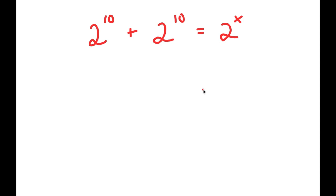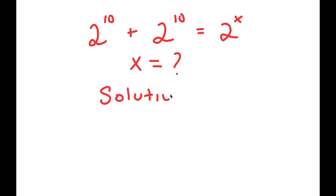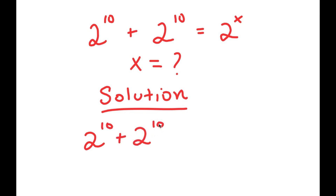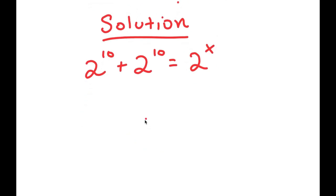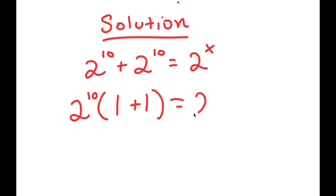Now for the next problem: 2 to the power of 10 plus 2 to the power of 10 equals 2 to the power of x — find the value of x. I start by factoring out 2 to the power of 10 from the left-hand side, giving 2 to the power of 10 times (1 plus 1) equals 2 to the power of x.